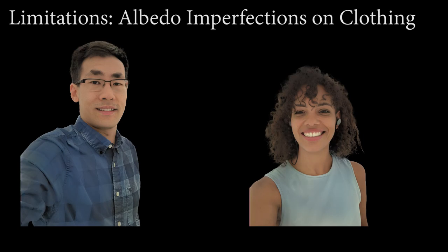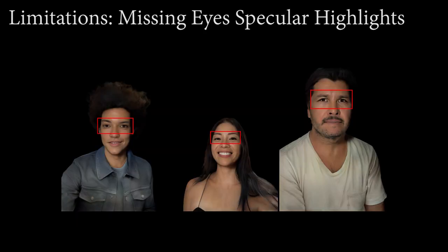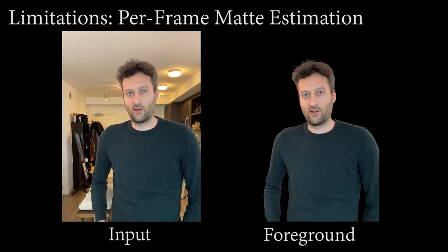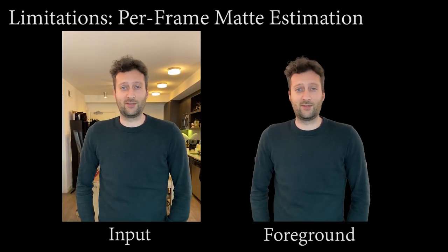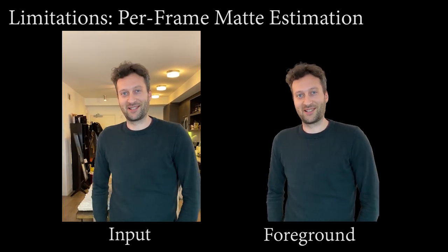Although our method generalizes well to in-the-wild portraits, it does have some limitations. First, our method relies on a partial intrinsic image decomposition, and the estimated albedo can be imperfect for clothing. Next, our relit portraits are missing important specular highlights for the eyes. And finally, our matte estimates are per frame, and so we can see temporal inconsistencies.